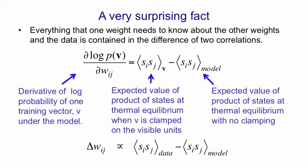So because the derivative of the log probability of a visible vector is this simple difference of correlations, we can make the change in the weight be proportional to the expected product of the activities averaged over all visible vectors in the training set, that's what we call data, minus the product of the same two activities when you're not clamping anything and the network has reached thermal equilibrium with no external interference.